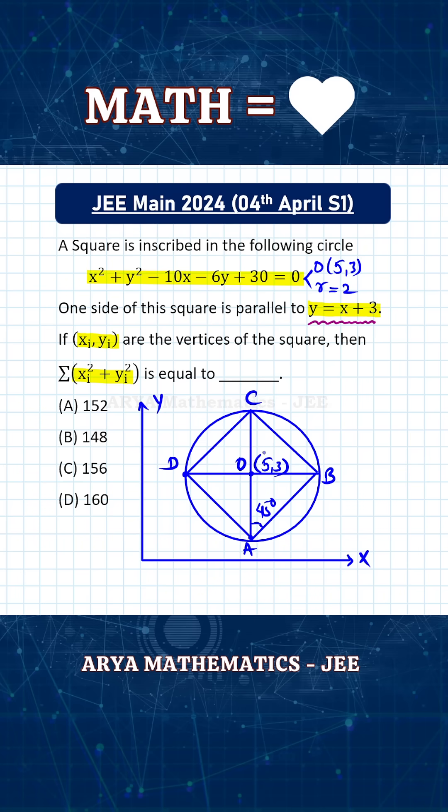Once you make this observation, the problem becomes very simple. Directly from geometry we can get the coordinates. The coordinate of center is (5, 3) and radius is 2 units, so coordinate of point A is (5, 1). Similarly, coordinate of point C is (5, 5), coordinate of point B is (7, 3), and coordinate of point D is (3, 3).